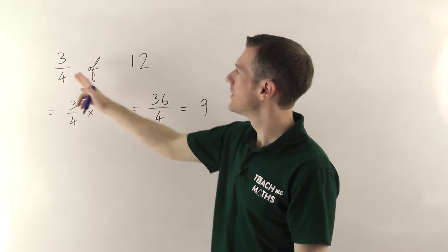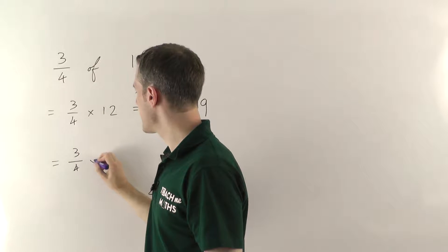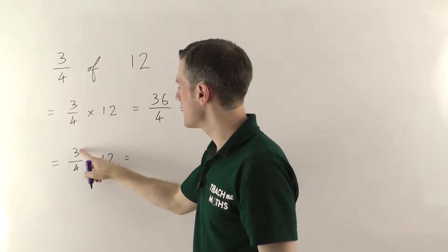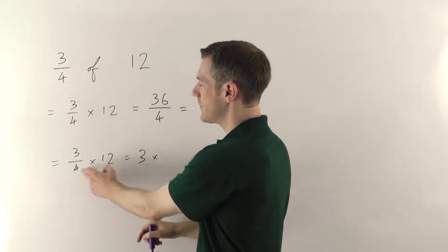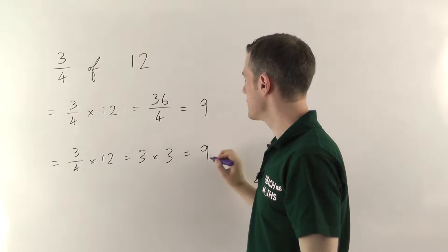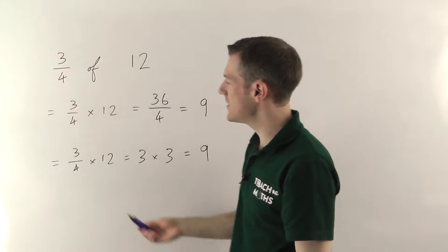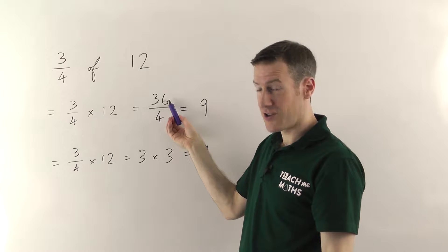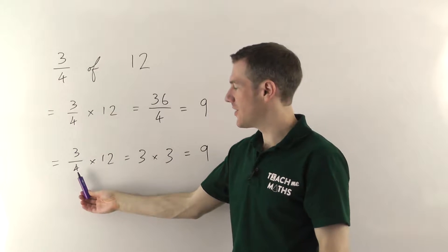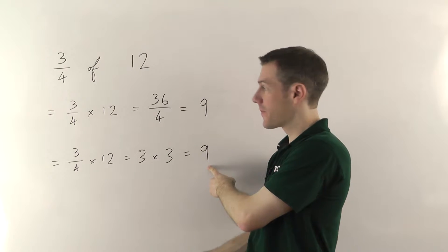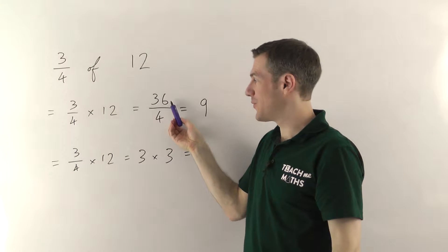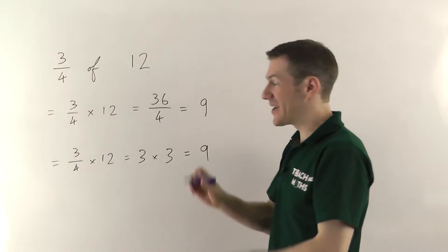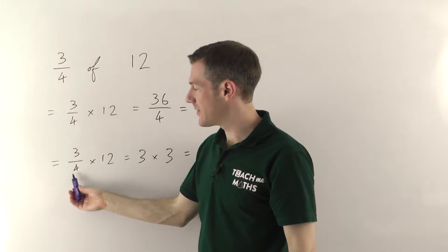I actually think it's a bit easier to do it that way. Going back to the original question — 3 quarters times 12 — if we do 12 divided by 4 first and then times by 3: the 12 divided by the 4 gives you 3, and 3 times 3 gives you 9. You get the same answer either way. It's easier dividing by the 4 first to get 3 and then multiplying up to 9, rather than multiplying 12 by 3 to get 36 and then dividing. Dividing first makes the numbers smaller before you multiply them back up. Generally it's easier to work with smaller numbers, so I recommend you divide first and then multiply.